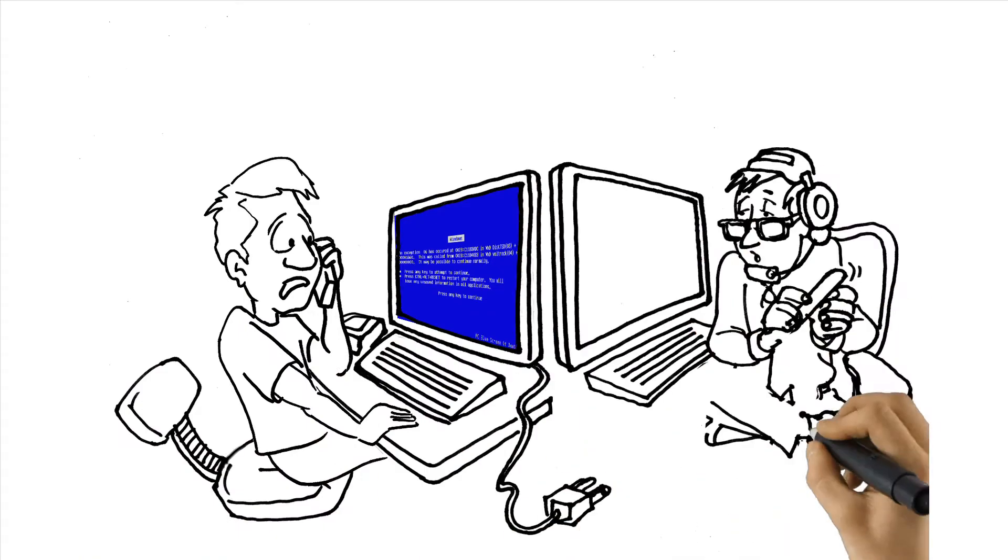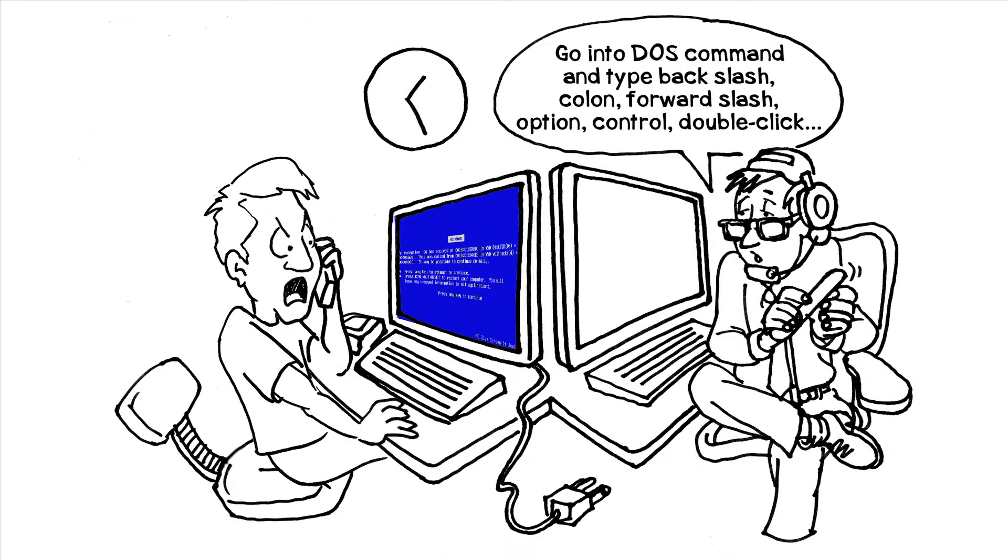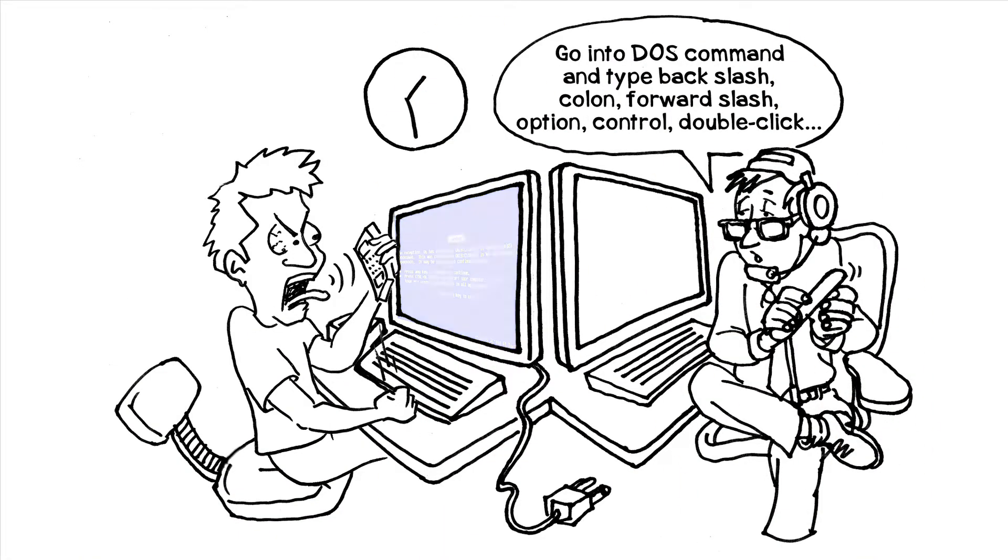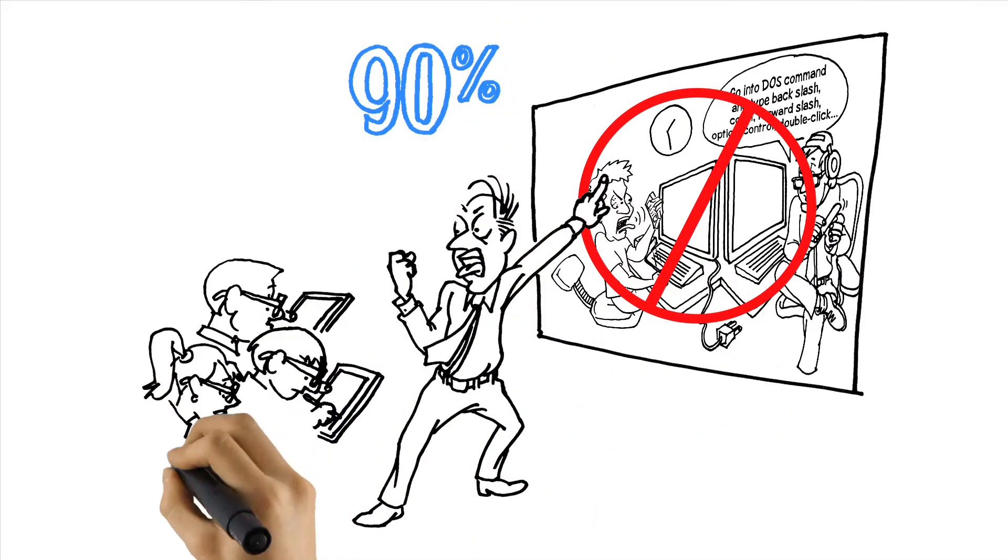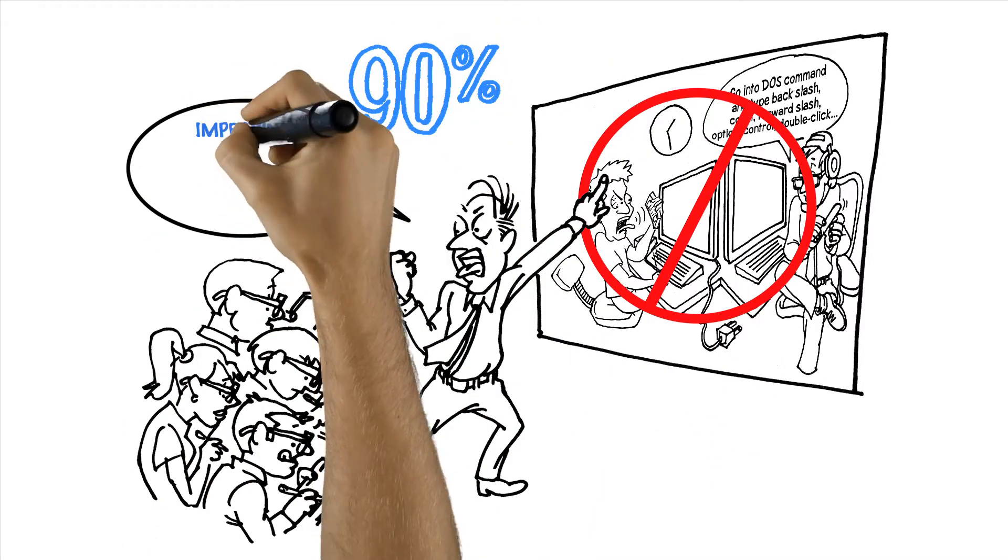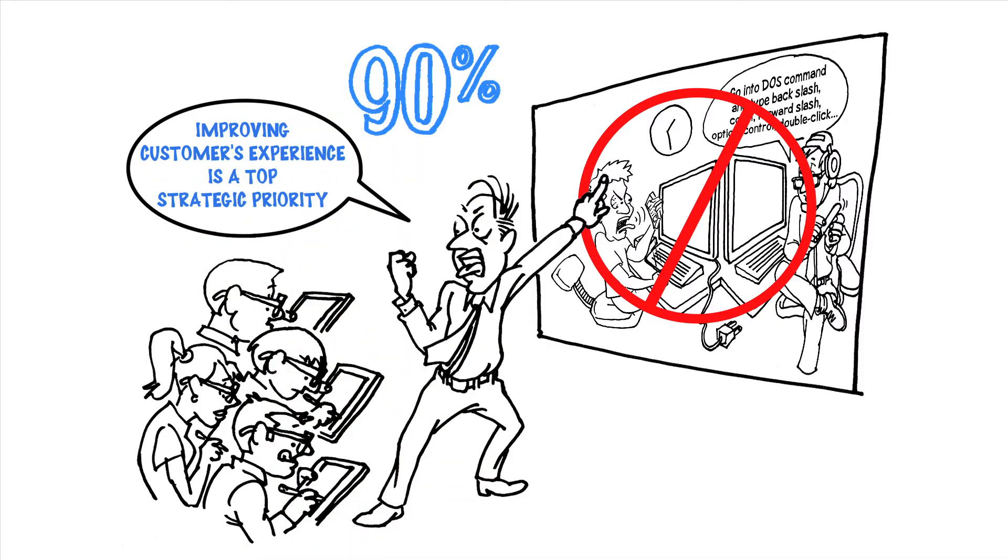So when things go wrong, you only have a moment to fix the problem, or your reputation can be destroyed. That's why almost 90% of high-tech and telecom companies say improving the customer experience is a top strategic priority.